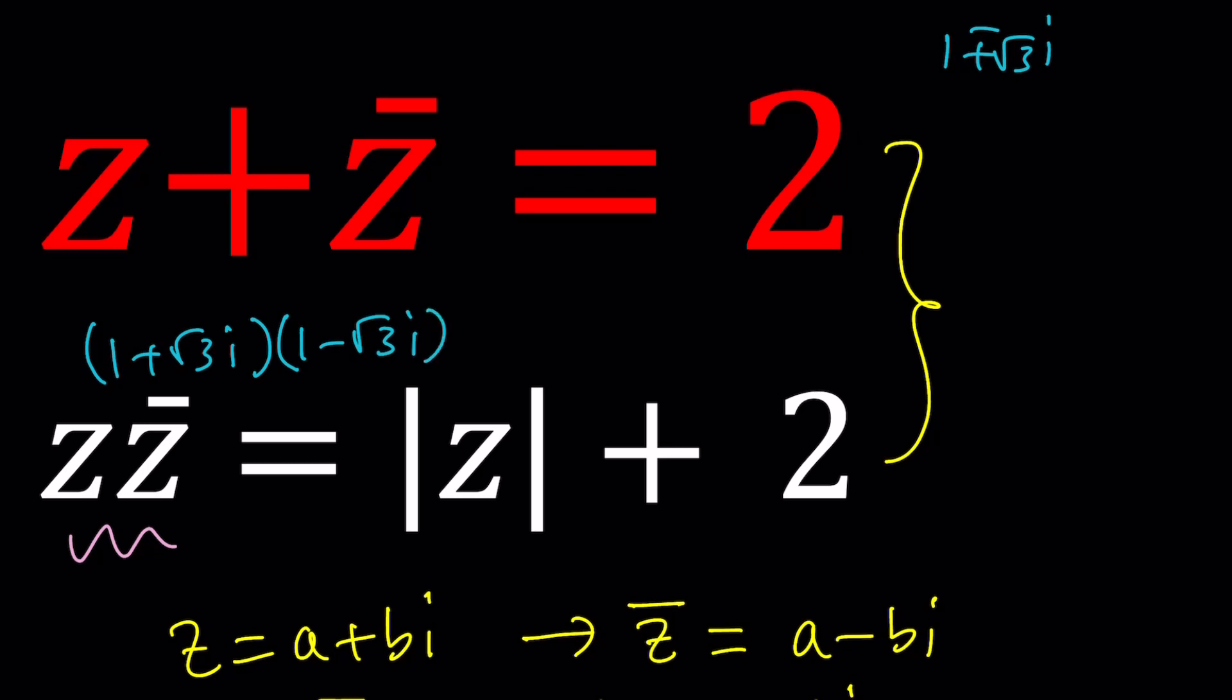And the product here is going to give us 1 minus 3, which is actually, I'm sorry, 1 plus 3, which is equal to 4. And then the absolute value of z from here is 2. And 2 plus 2 is equal to 4. Therefore our answer checks with our findings. That means they are correct.